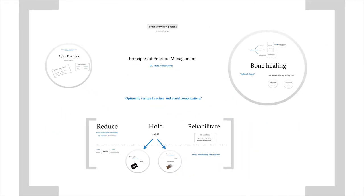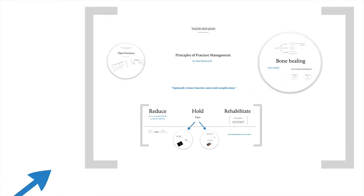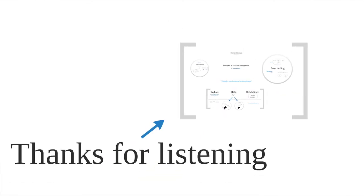In summary, the principles of fracture management: reduce if necessary, hold, and rehabilitate. Remember the three phases of bone healing — reactive, reparative, and remodelling. And for open fractures, remember the Gustilo classification. Thanks for listening.